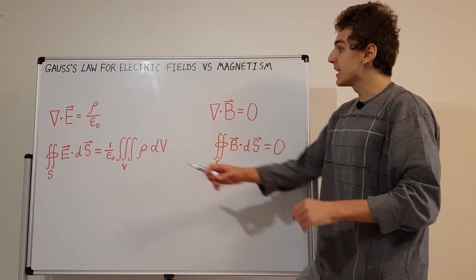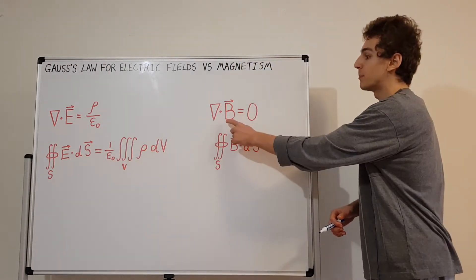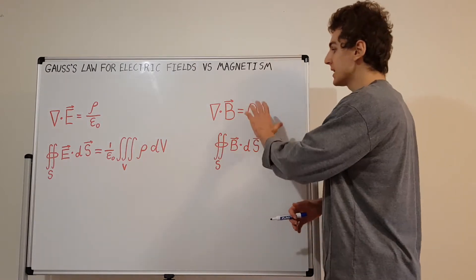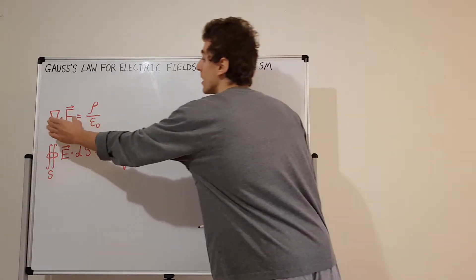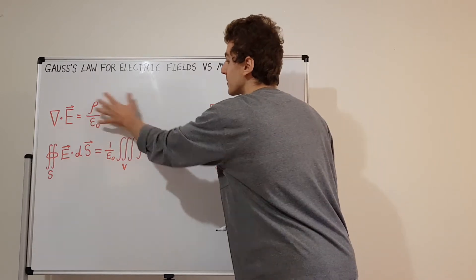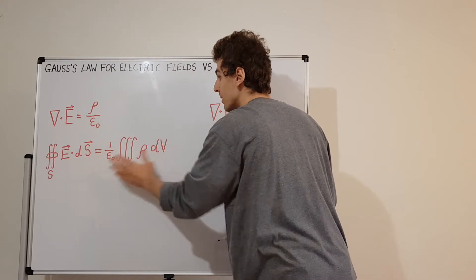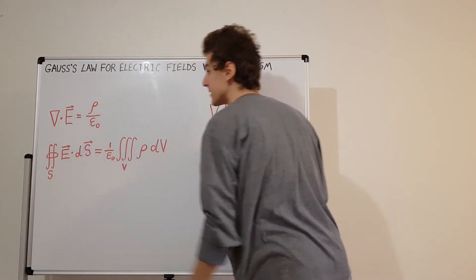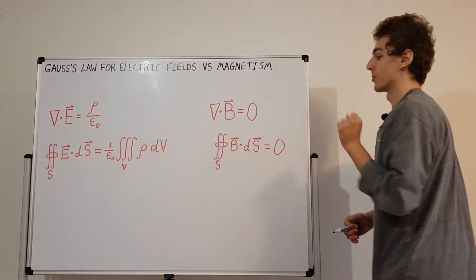The vector E is the electric field, and the vector B is the magnetic field. These equations have a very similar form. In the differential forms we have the divergence of the vector field, and then something on the right hand side — and that something is different for both equations. In the integral form we have a surface integral over a closed boundary surface S, and on the right hand side we have something on the electric side and zero on the magnetic side.